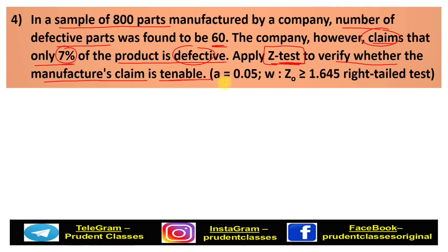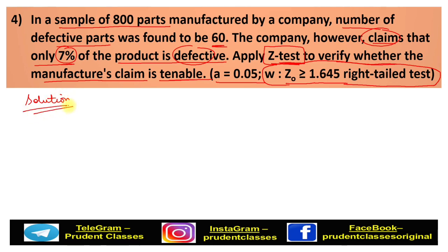You have to apply the Z-test and verify whether the manufacturer's claim — that the defect rate is 7% — is correct or not, i.e., whether the claim is tenable. The table values are already given in the question. The level of significance is 5%, and the Z table value provided is 1.645. You just need to focus on how to do the solution.